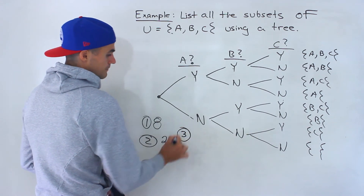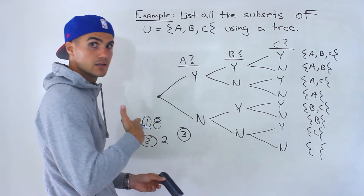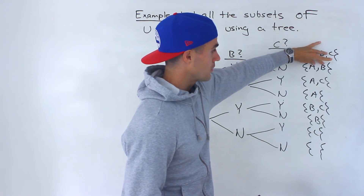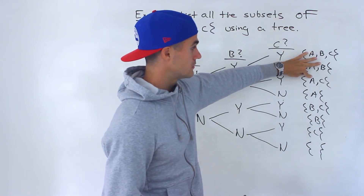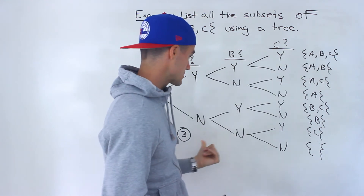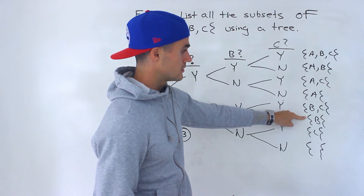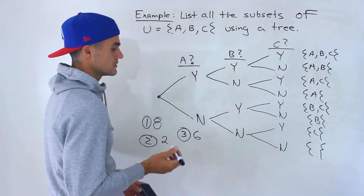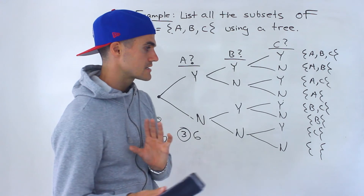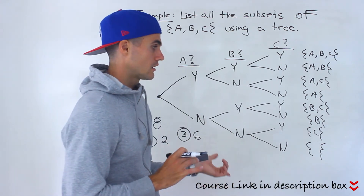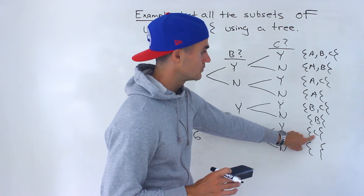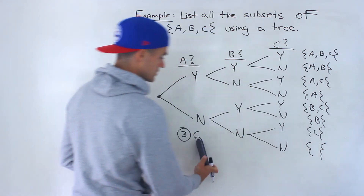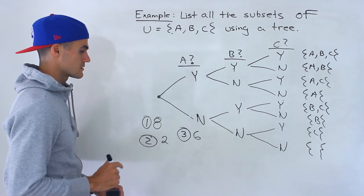Number three asks how many subsets contain A or B — it doesn't have to be both. Counting them: two contain both A and B, plus the subsets that contain just one of them. That gives us six total. Another approach is to find the subsets that contain neither A nor B — which are just the null set and the set containing only C, two subsets — and subtract from eight to get six.